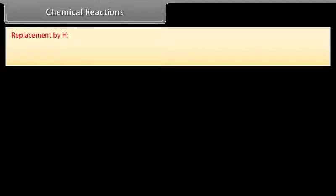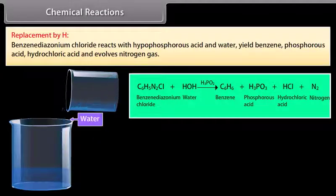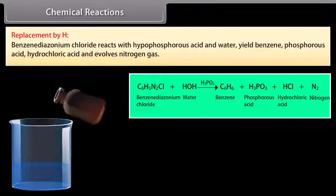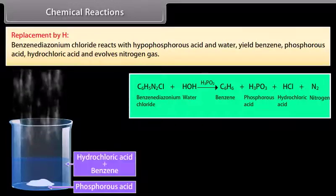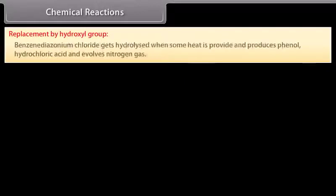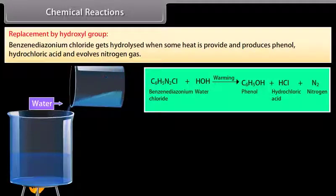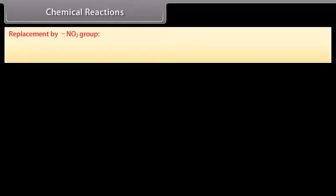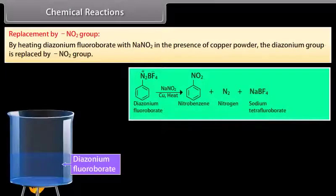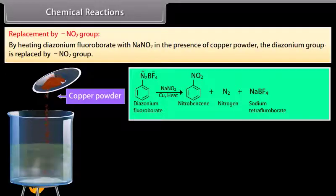Replacement by H: Benzene diazonium chloride reacts with hypophosphorous acid and water to yield benzene, phosphorous acid, hydrochloric acid, and nitrogen gas. Replacement by hydroxyl group: Benzene diazonium chloride gets hydrolyzed when heated to produce phenol, hydrochloric acid, and nitrogen gas. Replacement by nitro group: By heating diazonium fluoroborate with sodium nitrite in the presence of copper powder, the diazonium group is replaced by a nitro group.